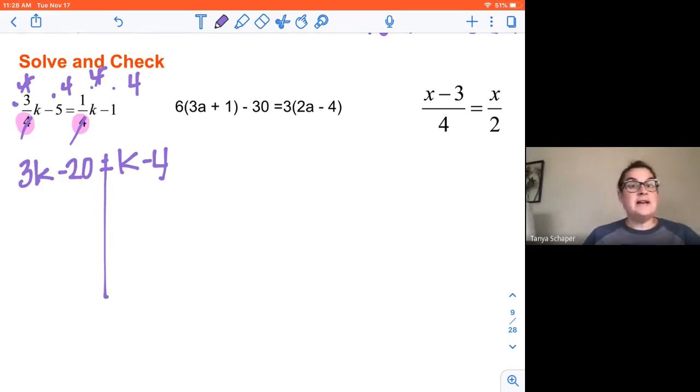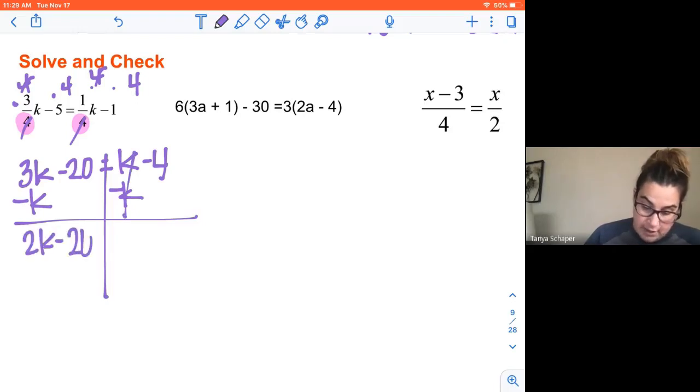Now what I have is the ability to work with only integers, which helps things out for some of us. When I look at this, both sides are simplified. I don't have to combine any like terms or distribute. So now I decide what side I want my variables on. This does not matter. If you want them on the left, put them on the left. If you want them on the right, put them on the right. We should all end up with the same answer either way. I'm going to put them on the left. So I need to get rid of K on the right. So I'm going to subtract K from both sides. So I end up with 2K minus 20 is equal to negative 4.